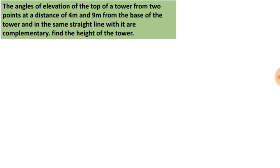If we observe this problem, the angles of elevation of the top of a tower from two points which are 4m and 9m away from the base of the tower are making complementary angles. Let us visualize this problem first using some pictures.